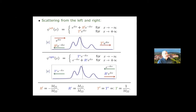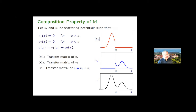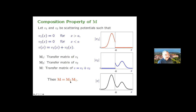The transfer matrix has a basic property called the composition property, which says that if you have a potential V which you can split as the sum of two potentials with disjoint supports — one of them vanishing up to x equal to a and the other afterwards — then the transfer matrix for V is the product of the individual transfer matrices M2 and M1, where this order of matrix multiplication is important. When the support of V2 is to the right of V1, then M2 comes before M1 in this product.